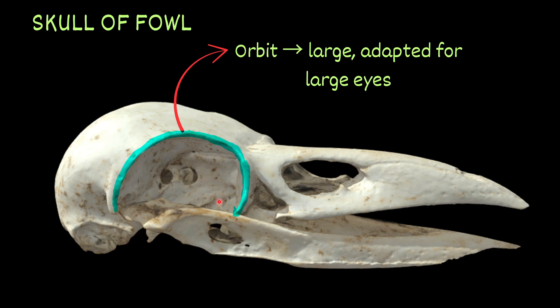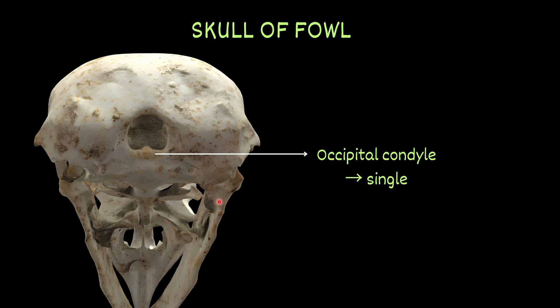The orbit is very large, adapted for large eyes. In the owl, there is a single occipital condyle, meaning the skull is monocondylic in nature.